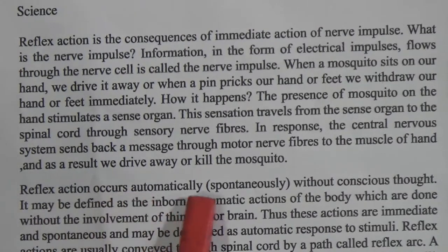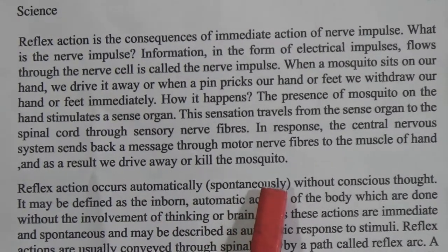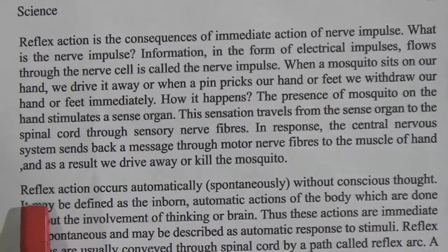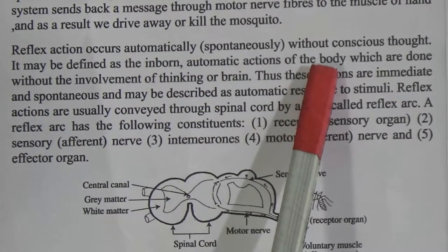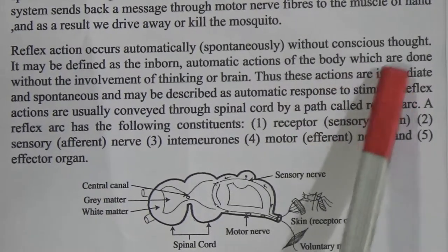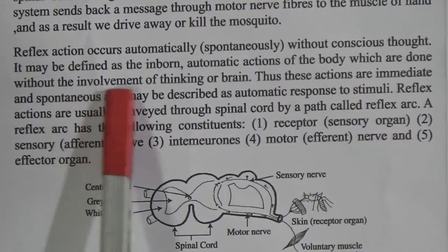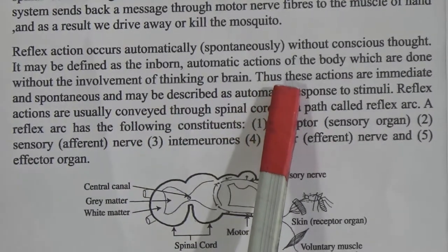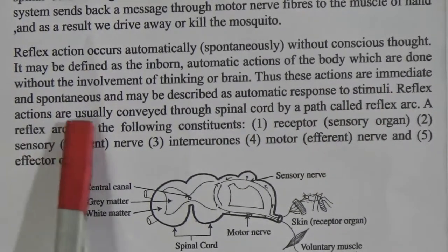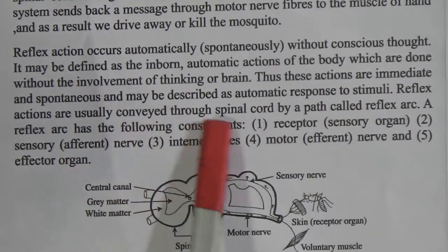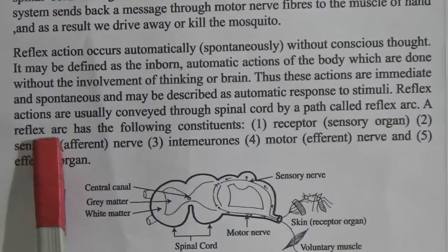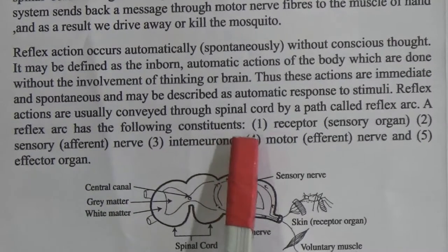As a result we drive away or kill the mosquito. Reflex action occurs automatically and spontaneously without conscious thought. It may be defined as the inborn automatic action of the body which is done without any involvement of thinking or the brain. Thus these immediate actions are usually conveyed through the spinal cord by a path called the reflex arc.